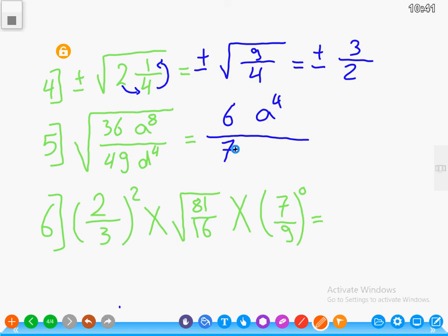Now, 2 over 3 to the power 2, multiply root 81 over 16, multiply 7 over 9 to the power 0. Root of 81 over 16 equals 9 over 4. Any fraction to the power 0 equals 1, then the result will be 1.